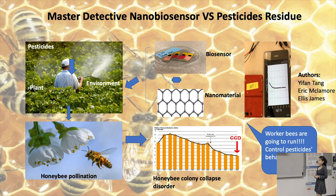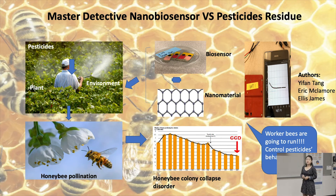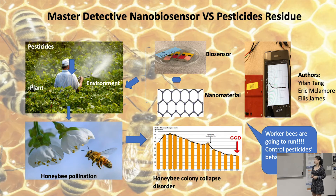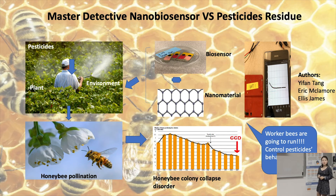To realize this target, I will use a nanomaterial as the surface of the biosensor. Nanomaterial is a material whose single unit is under 1000 nanometers. It has high conductivity, and when applied to the biosensor surface, it will improve the performance of the sensor, making it more sensitive and more stable.